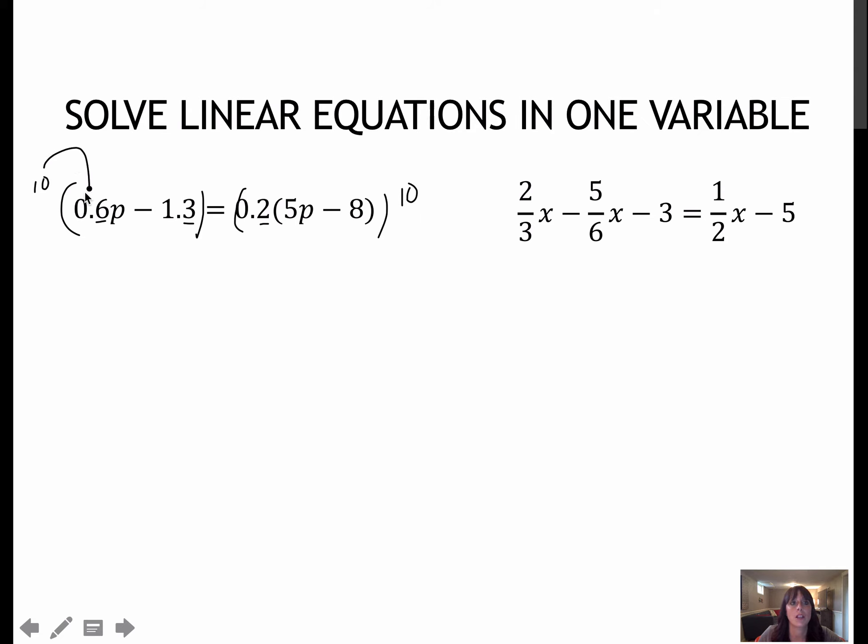0.6 times 10 or 6 tenths times 10 gives me 6, so that's now 6p. 1.3 or 1 and 3 tenths times 10. Remember, that's just moving the decimal one place. And then if I distribute to this side, that gives me a 2. Now notice I didn't touch what's on the inside because that's going to be affected when I multiply by that 2. So when you have a value like this on the outside, don't distribute the 10 to everything. So it's just these values on the outside. And now I'm going to distribute on the right side. So this side stays 6p minus 13. This is 10p minus 16.